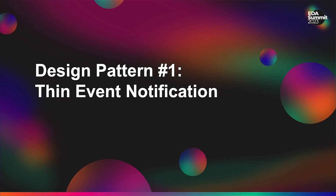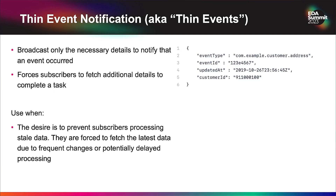Design pattern number one: thin event notification. In this case we broadcast only the necessary details to notify that an event has occurred, often forcing subscribers to fetch additional details to complete the task. We're letting people know what happened but not giving them all the data — it's up to them to use a synchronous API like REST or GraphQL to fetch the most recent details. Use this when you want to prevent subscribers from processing stale data.